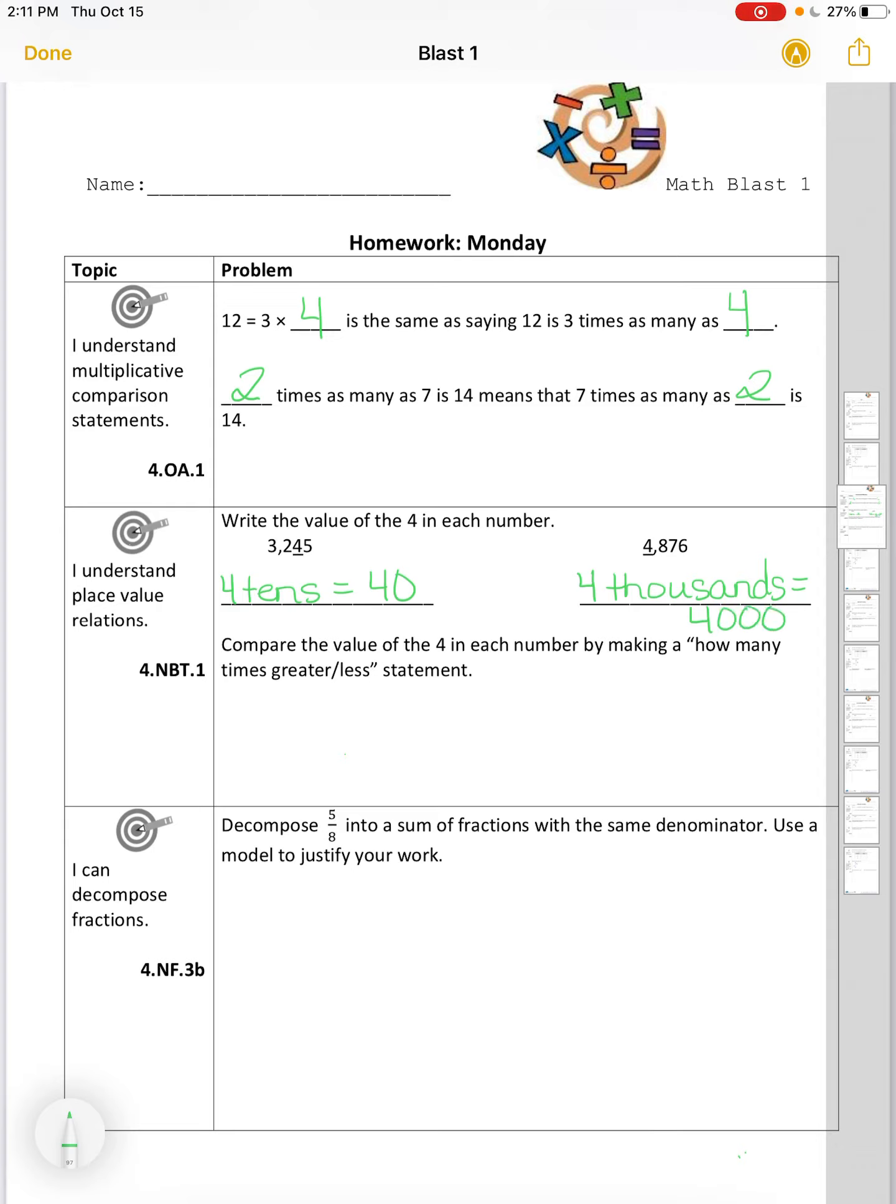Compare the value of the 4 in each number by making a how many times greater or less statement. Well, I'm going to show this on a place value chart here. We have the ones, tens, hundreds, and thousands. And I want to show each of the numbers on this place value chart. So I have 40 compared to 4,000.